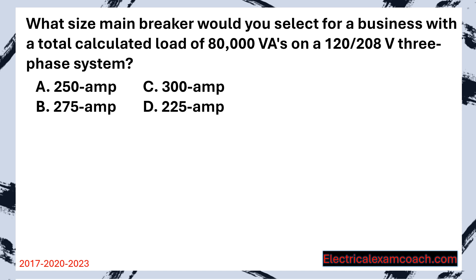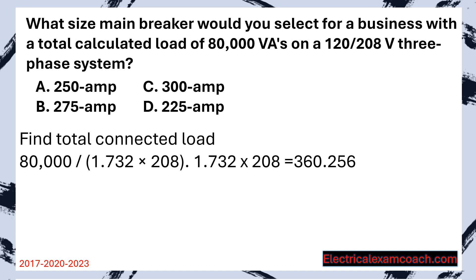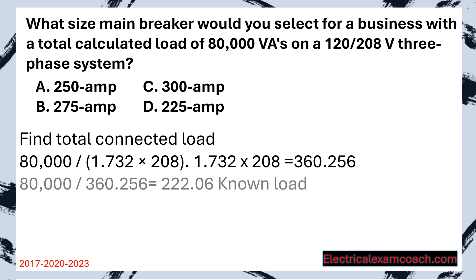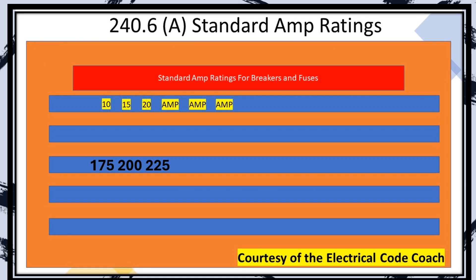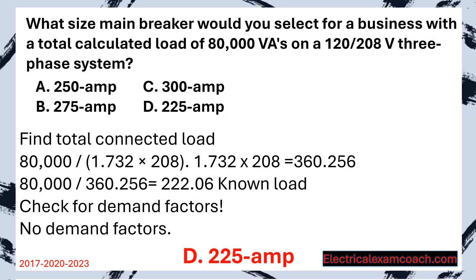What size main breaker would you select for a business with a total calculated load of 80,000 VAs on a 120/208 three-phase system? Step one: find our total connected load. They've done the work for us and given us the 80,000 VAs. We do our pre-work: 208 multiplied by 1.732 equals 360. We divide and end up with 222 amps — we round down to 222. There are no more demand factors. We head to Table 240.6A, choose the next standard size up, and put this on a 225 amp service.